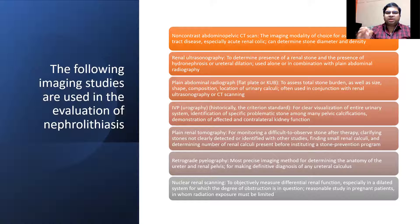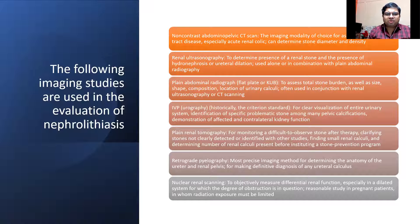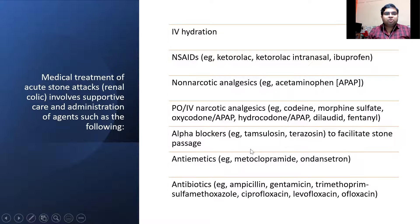For imaging, NCCT KUB is done for patients in acute colic at the emergency department. Ultrasound shows whether hydronephrosis is present but cannot delineate a ureteral stone, though it can show a kidney stone. X-ray KUB is often obscured by bowel gas. IVP is important for functional anatomy, but CT-IVP has superseded plain X-ray IVP, and retrograde pyelography is performed on the OT table.